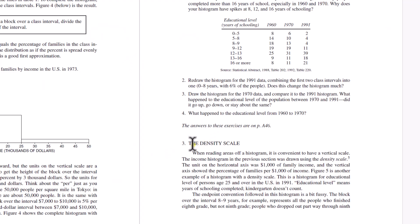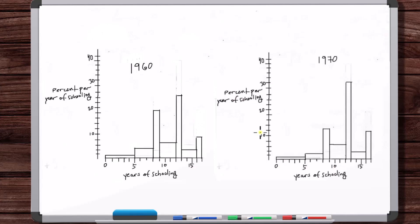In the next section, we're going to talk about the density scale — how to interpret strictly the height on a histogram, not the area, the height.